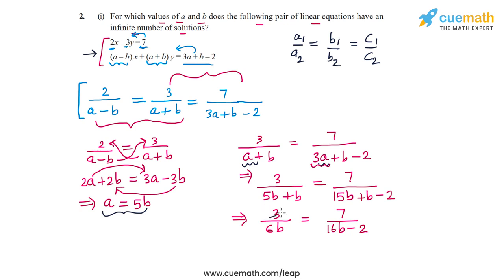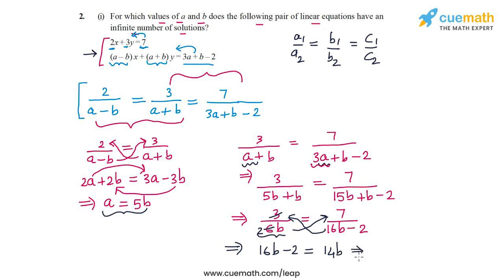Simplifying: the 3 cancels with 6 to give 2. Cross multiplying gives (16B minus 2) equal to 2B times 7, which is 14B. From here we get 2B equal to 2, so B equal to 1. And because A is equal to 5B, we get A equal to 5. So the values are A equal to 5 and B equal to 1.